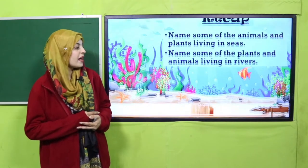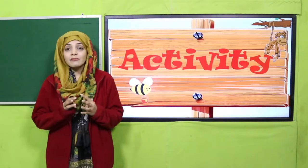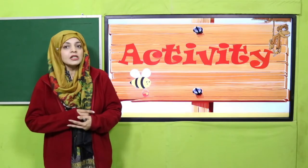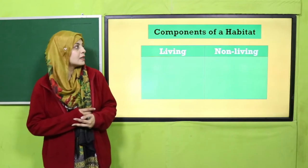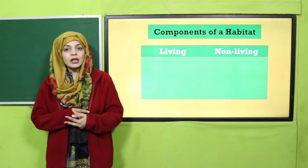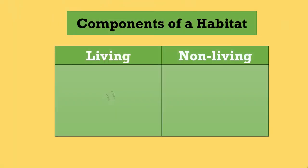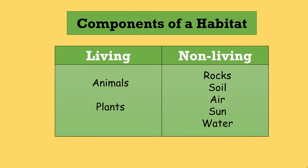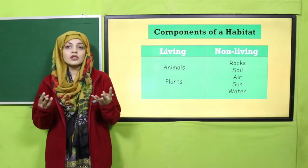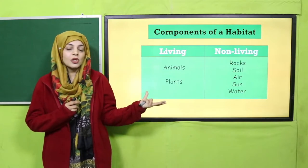Now it's time for an activity you will thoroughly enjoy. Here you can see the components of a habitat. The living components are plants and animals, whereas the non-living components are rock, soil, air, sun, and water. These are the components of a habitat — a natural home for any animal.